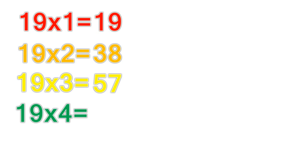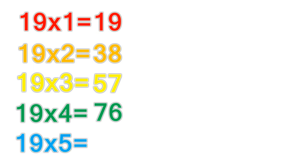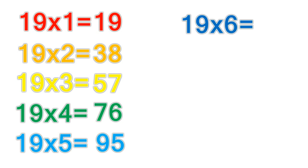19 times 4 equals 76. 19 times 5 equals 95. 19 times 6 equals 114.